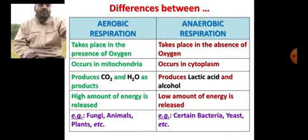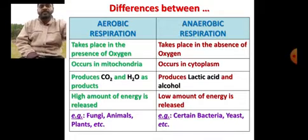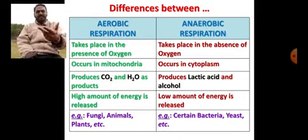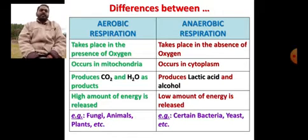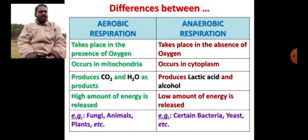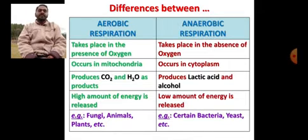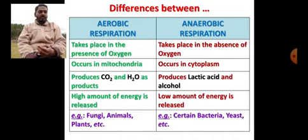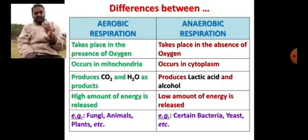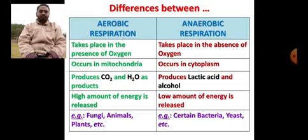Now the differences between aerobic respiration and anaerobic respiration — important for exams and entrance tests. Aerobic respiration takes place in the presence of oxygen; anaerobic in the absence of oxygen. Aerobic respiration takes place in mitochondria; anaerobic respiration takes place only in the cytoplasm of the cell. Aerobic respiration releases carbon dioxide and water vapor as products, but anaerobic respiration produces lactic acid as well as alcohol — both dangerous for health.